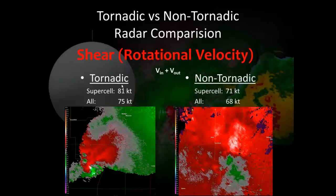Ron asks: are these values from just the lowest elevation angle, or the lowest two? Answer: this is the maximum below 10,000 feet. Ron follows up asking about the distance range — noting that at 150 kilometers the center beam would be around 9,000-10,000 feet. The answer is that all cases are within 60 nautical miles of the radar.